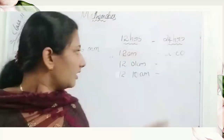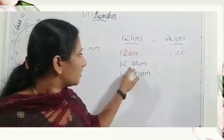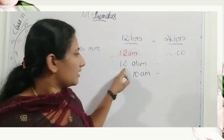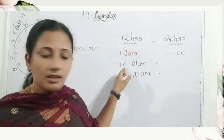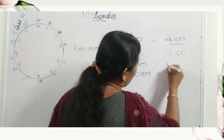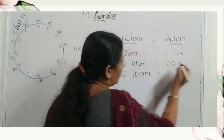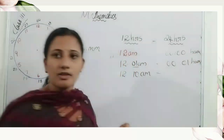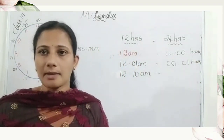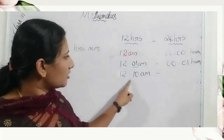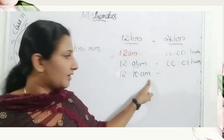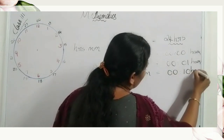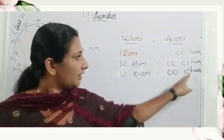Twelve one a.m. — the given time is twelve, and twelve minus twelve is zero. So we write zero zero one. Twelve ten a.m. — we write zero zero ten. In the twenty-four hour clock system, there is no a.m. or p.m., only hours.